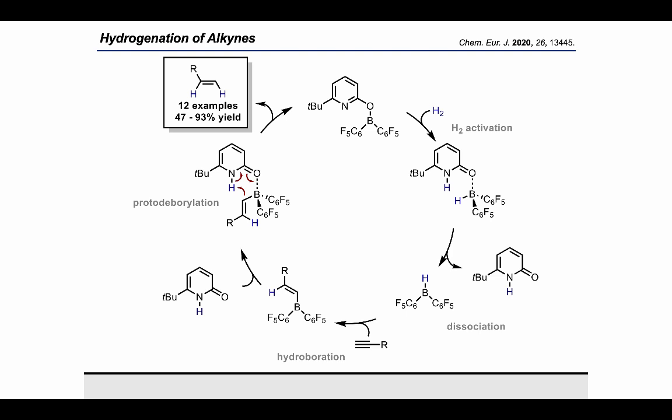At 80 degrees under 5 bar hydrogen pressure, we were able to hydrogenate six different internal alkynes with 5 mole percent of the pyridone borane as catalyst. With slightly higher catalyst loadings of 10 mole percent, we could also successfully hydrogenate six terminal alkynes.